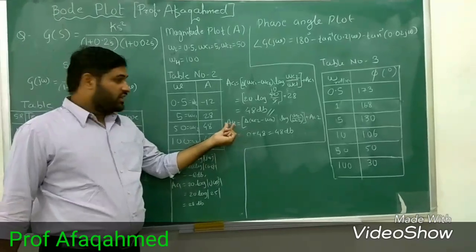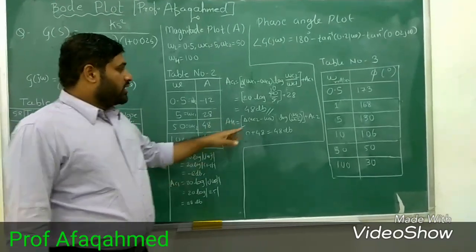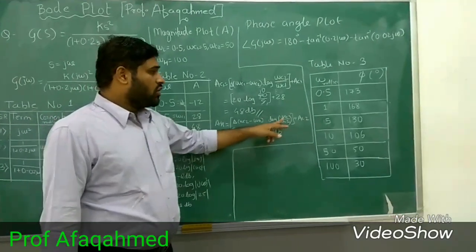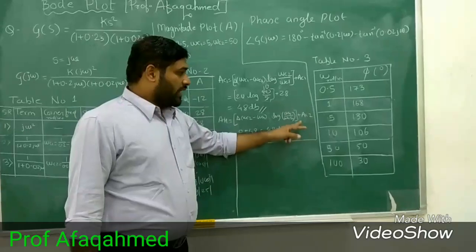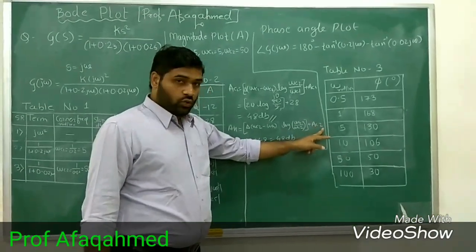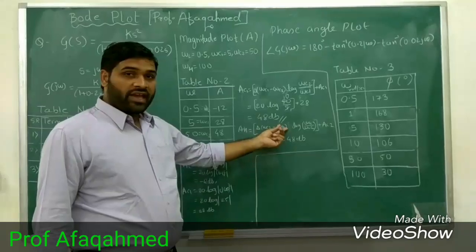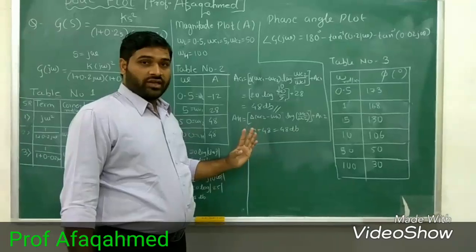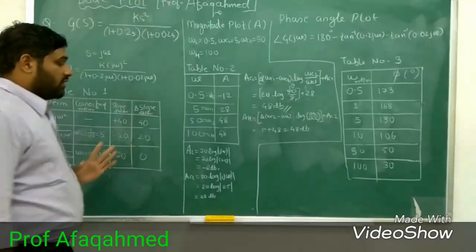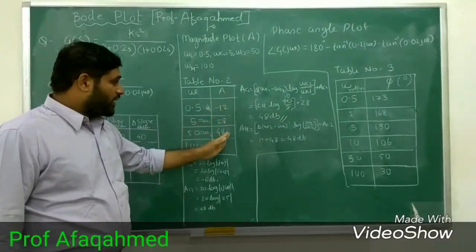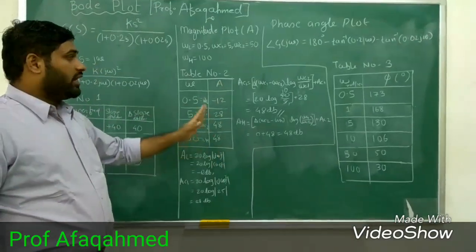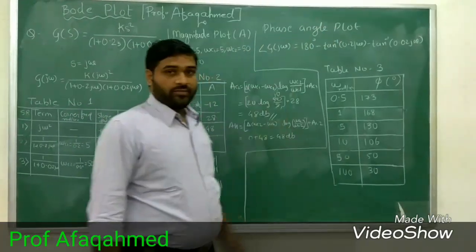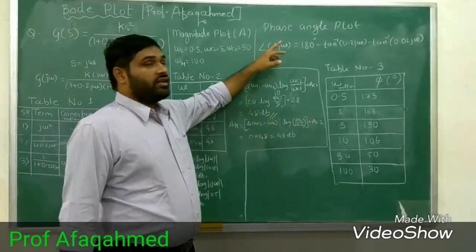For AH (higher magnitude), the formula is: delta slope from ωc2 to ωH × log(ωH/ωc2) + AC2. The change in slope from ωc2 to ωH is 0, so 0 + 48 = 48 dB. We put all the magnitude values into the table and complete it. The last part is the phase angle φ, which is generally denoted in degrees.